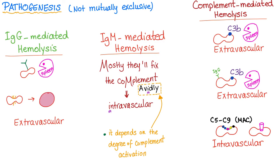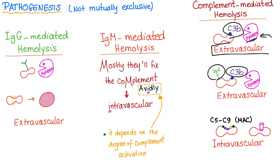IgM-mediated hemolysis depends on complement activation. For complement-mediated hemolysis, there are three stories. Story one: the red blood cell is covered with C3b; the splenic macrophage recognizes this and consumes it — extravascular. Story two: the red blood cell is coated with both C3b and IgG antibody, so the spleen consumes it — also extravascular.